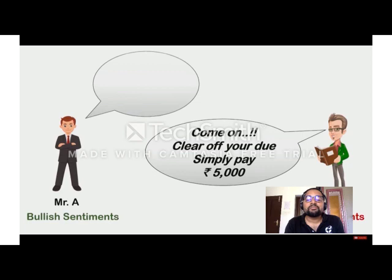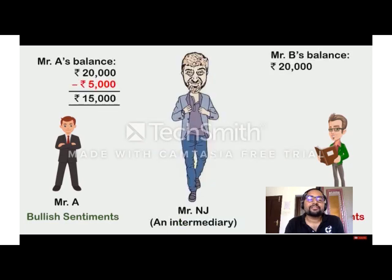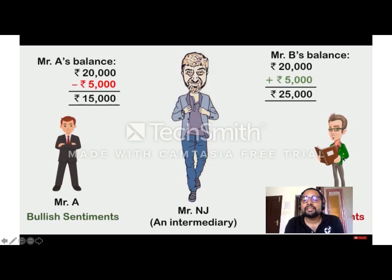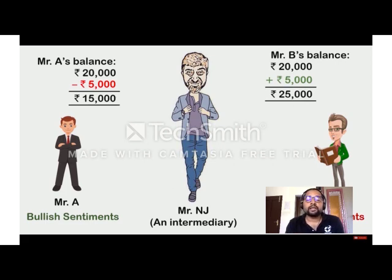Mr. B says: 'Pay Rs. 5,000.' Mr. A's margin balance remaining with the stock exchange is Rs. 20,000 minus Rs. 5,000 = Rs. 15,000. Mr. B's margin position becomes Rs. 20,000 plus Rs. 5,000 = Rs. 25,000 — where Rs. 5,000 is the profit from the contract.